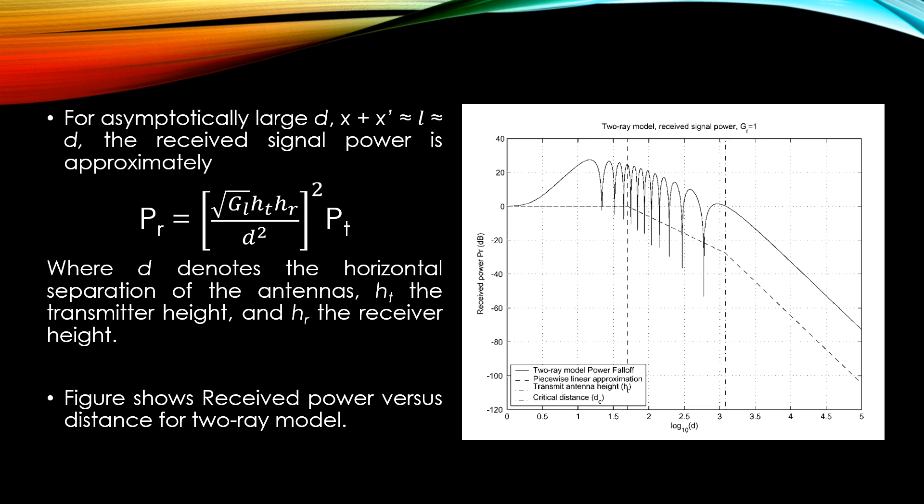For small distances, d less than ht, the two rays add constructively and the path loss is slowly increasing. For distances greater than ht and up to a certain critical distance dc, the wave experiences constructive and destructive interference of the two rays, resulting in a wave pattern with a sequence of maxima and minima.